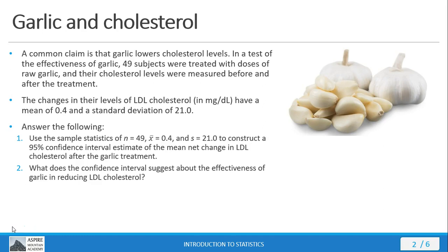To help us understand the difference between the old-school method and using StatCrunch for finding our critical value t-scores, we're going to look at an example problem involving garlic and cholesterol. It's been commonly claimed that garlic lowers cholesterol levels. To test this out, 49 subjects were treated with doses of raw garlic. Their cholesterol levels were measured before and after the treatment. The changes in their levels of LDL cholesterol have a mean of 0.4 and a standard deviation of 21.